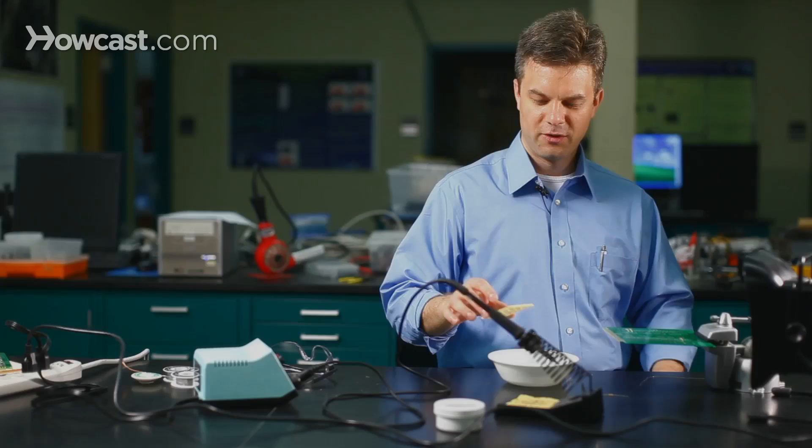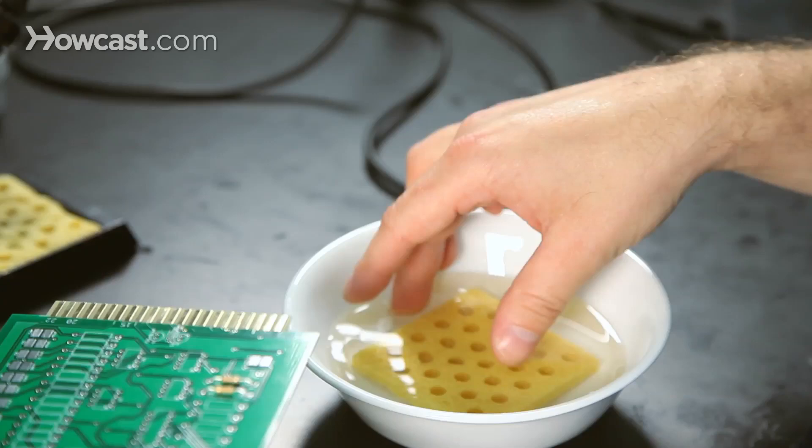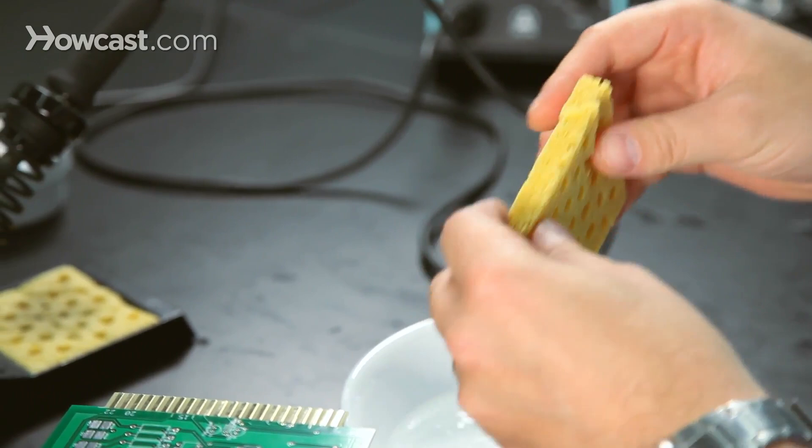This is a brand new sponge, so it's been compressed, and it's a little bit thinner than it will be after we wet it. Place it in a bowl of water or under a faucet. The sponge expands, and now it's a bit thicker than it was.